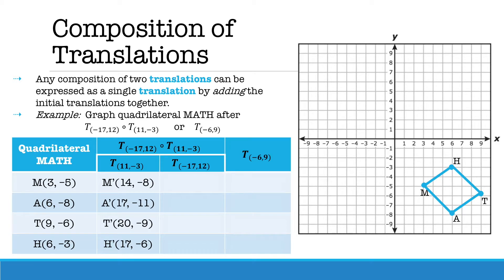Let's take a look at a composition of translations. Any composition of two translations can be expressed as a single translation by adding the initial translations together. So if we have a translation of (-17, 12) follows a translation of (11, -3), we can add the two compositions together to get a final translation of (-6, 9).